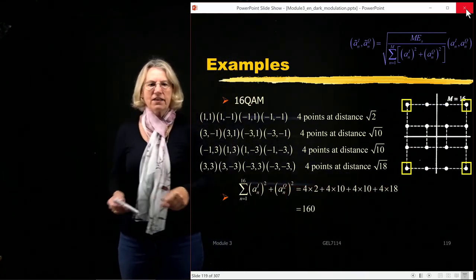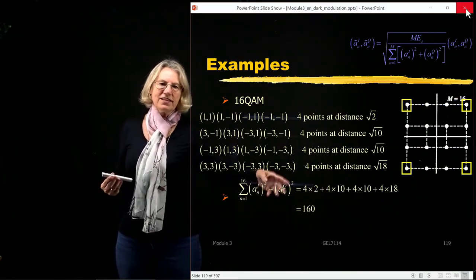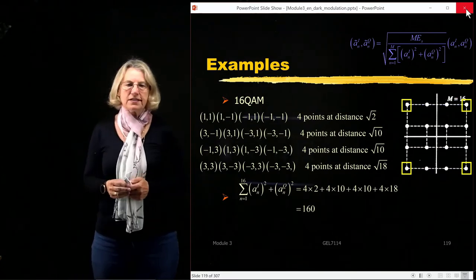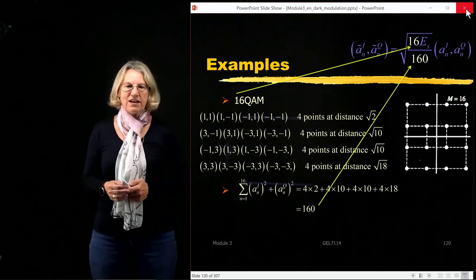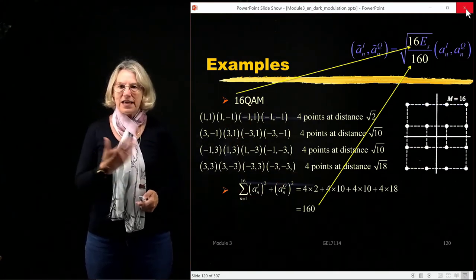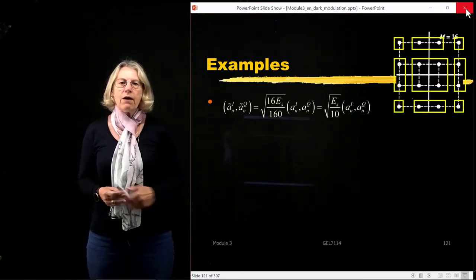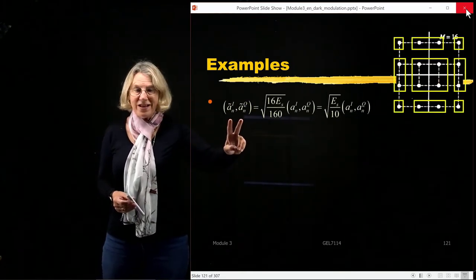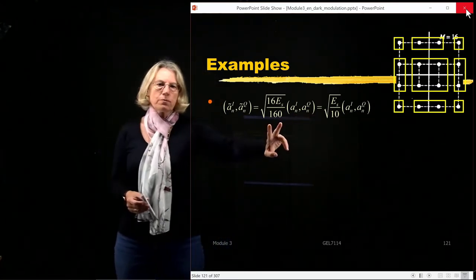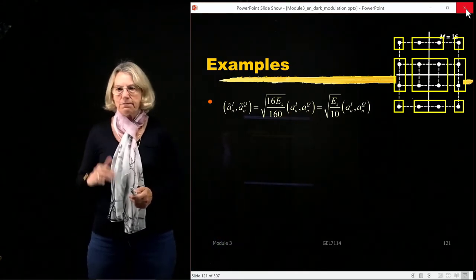Adding these up, the total squared distance comes to 160. Putting this into the equation, we have 16 from the 16-QAM and 160 from our calculation of the average squared distance. The coordinates in signal space are just the IQ coordinates multiplied by a normalization factor, which simplifies to the square root of ES divided by 10.